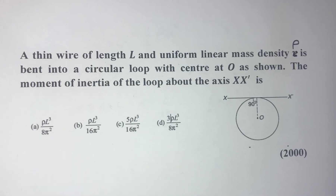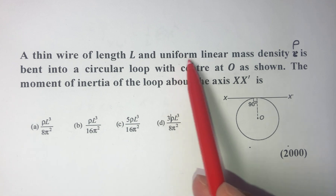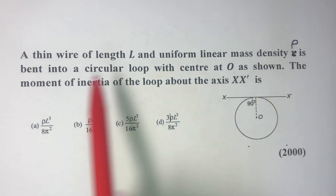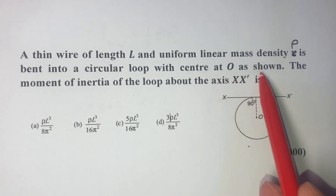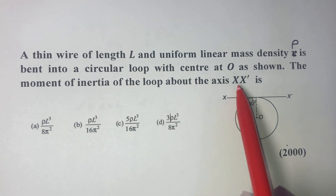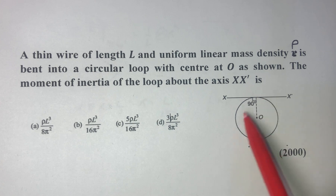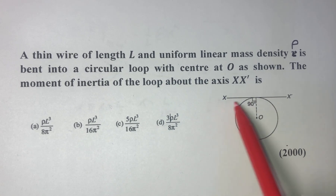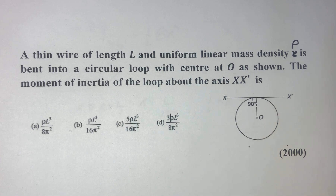Hello friends. In today's question, a thin wire of length l and uniform linear mass density rho is bent in a circular loop with center O as shown. We have to find out the moment of inertia of the loop about the x-x' axis.